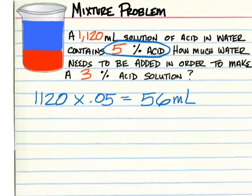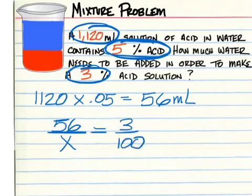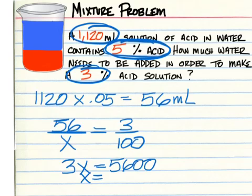Now instead of 56 milliliters being 5% of 1,120, we want it to be 3% of some higher number. So 56 over x equals 3 over 100. Cross multiply to get 3x equals 5,600. And when you divide 5,600 by 3, you come back with 1,866.66667.